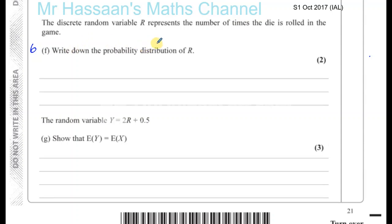If you get another 1 on the dice, then your score is 0. If you get any other number, then you add your original score of 1 — your original die showed a 1 — plus the number on your second dice. So basically, there are two different possible numbers of times you can throw the dice: 1 or 2. The possible values of R are 1 or 2.